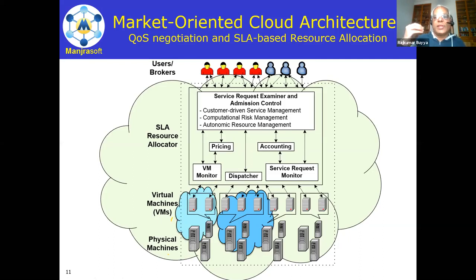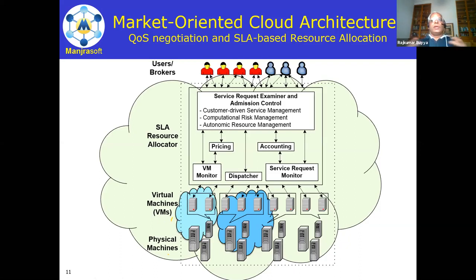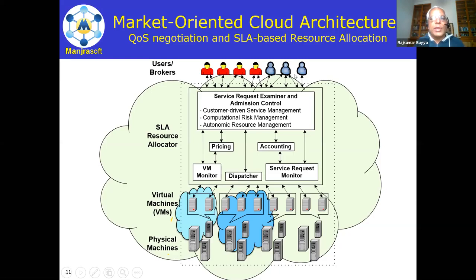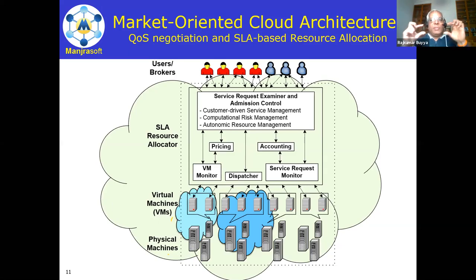When a user request comes in, there is an admission control system. The cloud must verify it can honor the quality promised. For example, this Zoom session is kept open — anyone who knows the link can join — whereas a university-provided Zoom link has a Zoom ID and password as admission control. In the cloud, admission control ensures we can really honor the expected quality. If this were open to all of India, a billion people might try to join and we couldn't serve them.